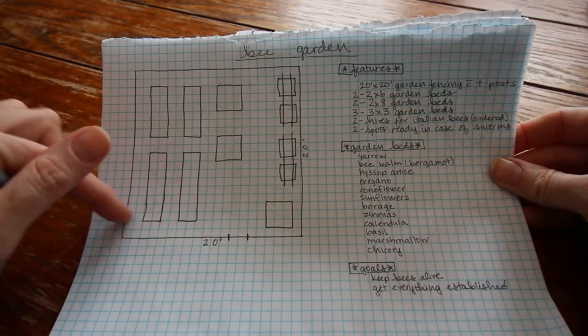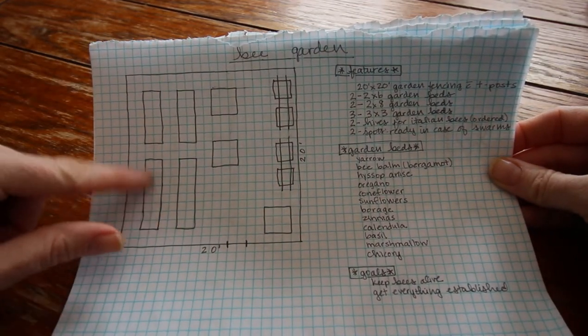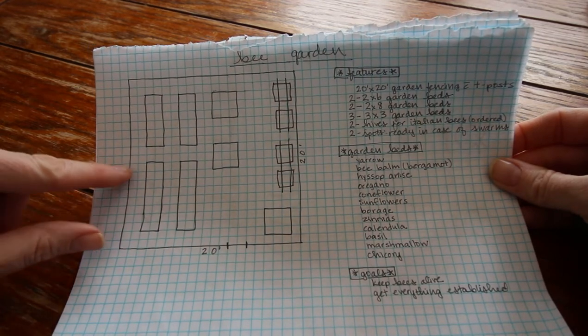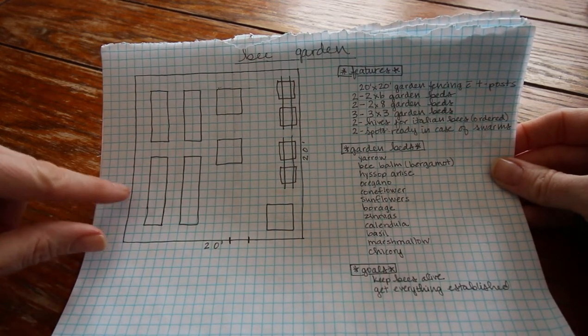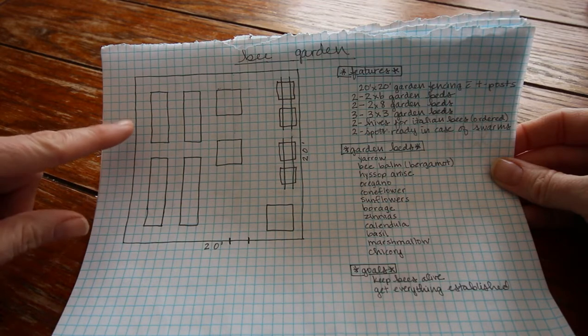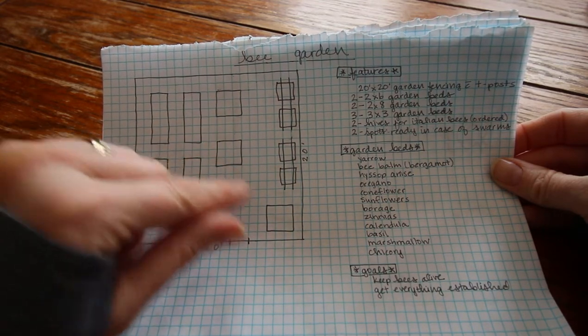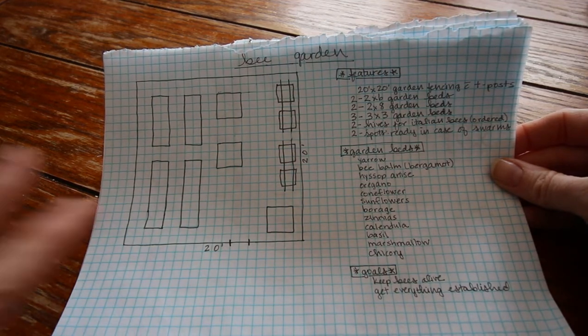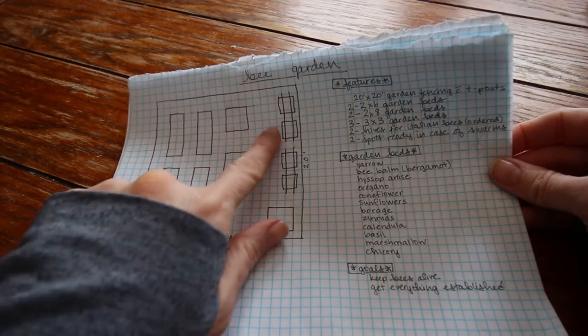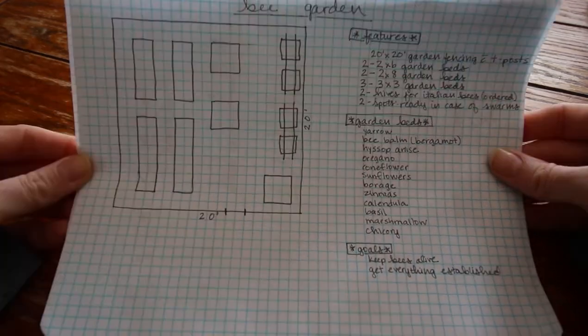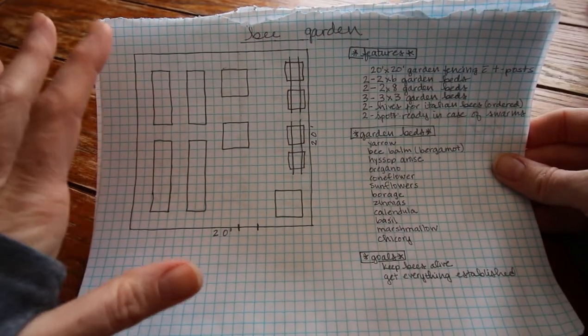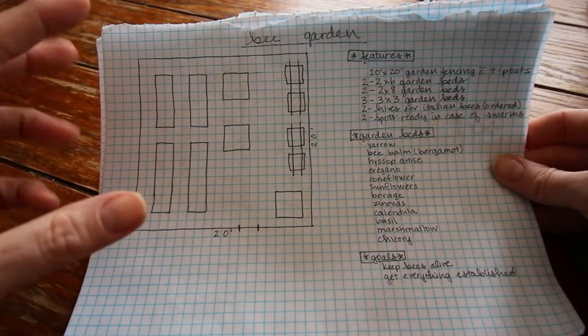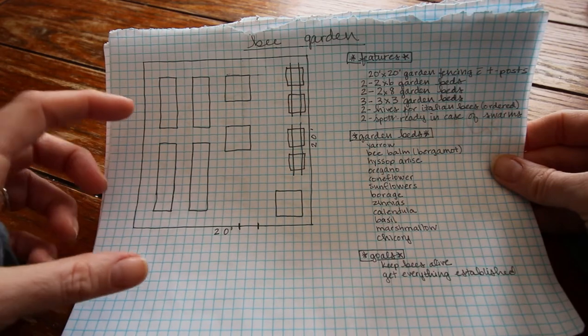This is the bee garden. I'm gonna fence this, it's gonna be 20 foot by 20 foot. These are going to be two by eight garden beds, two by six garden beds, and then these are gonna be the raised beds that Wyatt actually made that we had out last year.